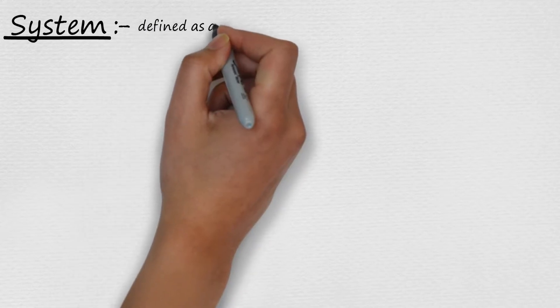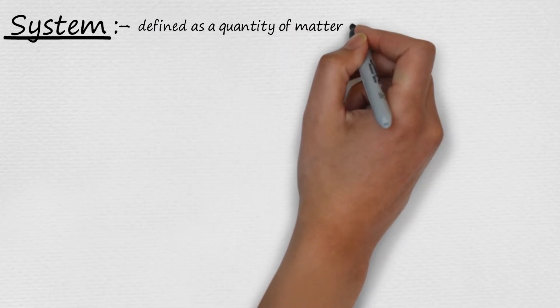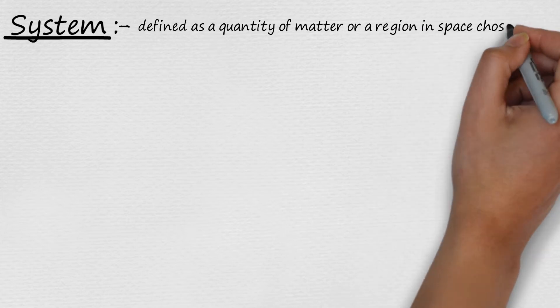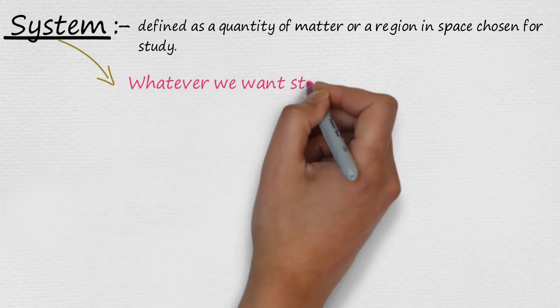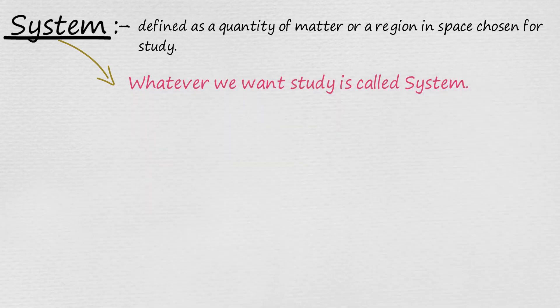A system is defined as a quantity of matter or a region in space chosen for study. Or, in simple terms, we can say that a system is whatever we want to study.